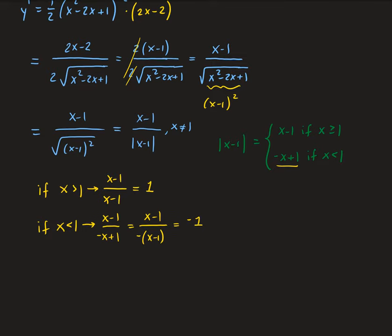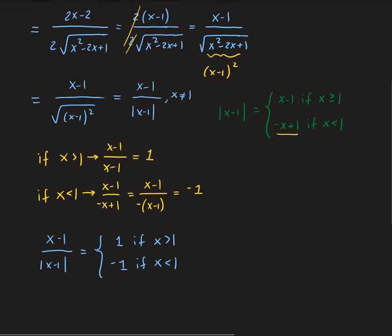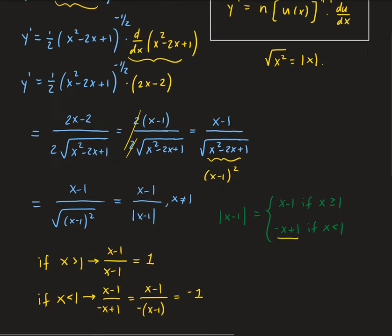So the derivative simplifies to 1 if x is strictly greater than 1, and negative 1 if x is strictly less than 1. Note that x cannot equal 1. That is the derivative of our function.